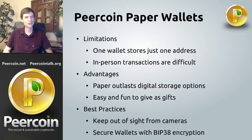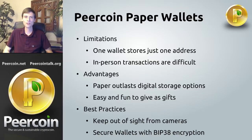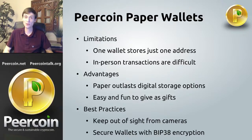Secondly, it's a good idea to encrypt your paper wallet with BIP38 encryption. That's a way to encrypt the private key so that if the paper wallet is stolen or seen by a camera, the finder cannot spend the PureCoins unless they know the passphrase used to encrypt it. If you're interested in how to use these tools, check out the link in the video description for a walkthrough on exactly how to create paper wallets and use BIP38 encryption.